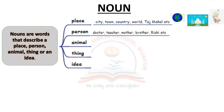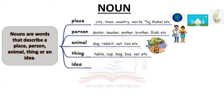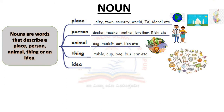For persons: doctor, teacher, mother, brother, Rishi, etc. — all kinds of people we know around us. For animals: dog, rabbit, cat, lion, etc. — all kinds of animals we know. For things: table, cup, bag, bus, car, etc. — all kinds of non-living things around us.